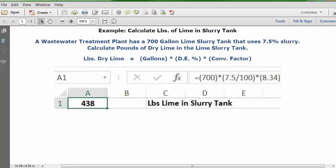Press enter or the return key and in A1 you'll have your answer: 438 pounds of dry lime.